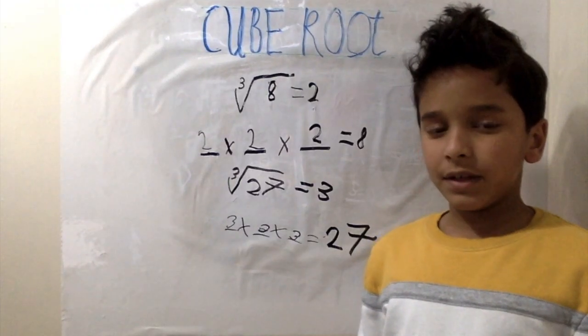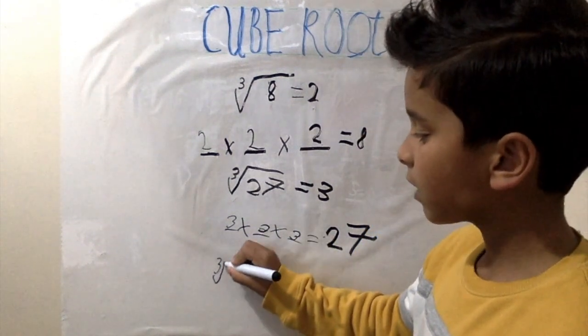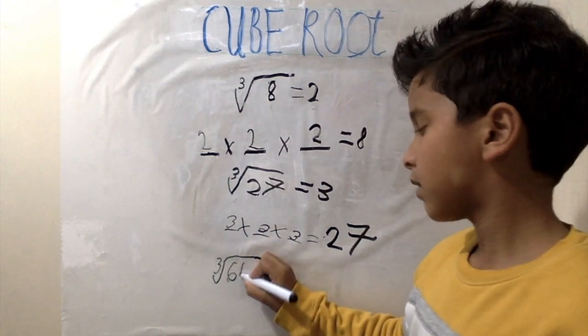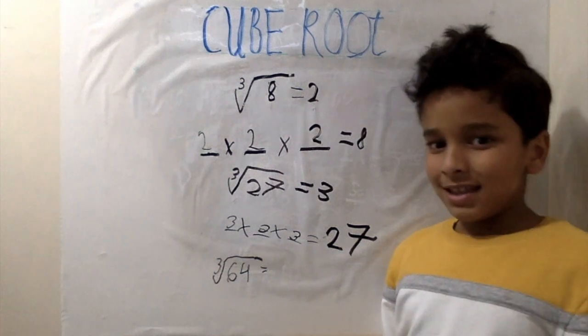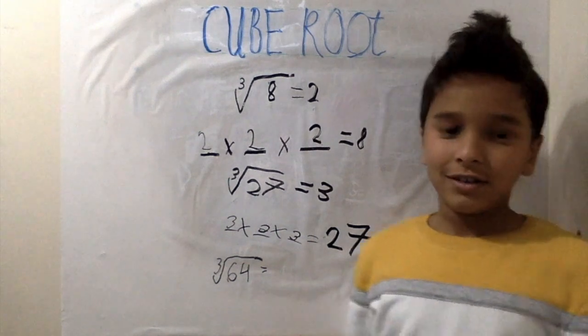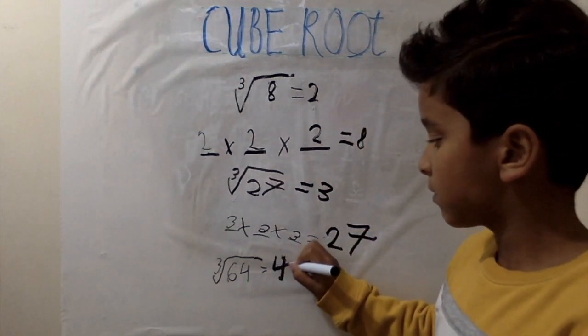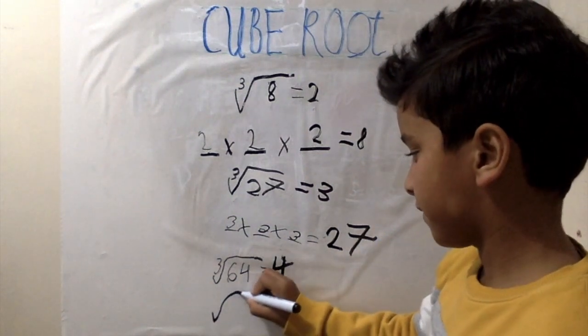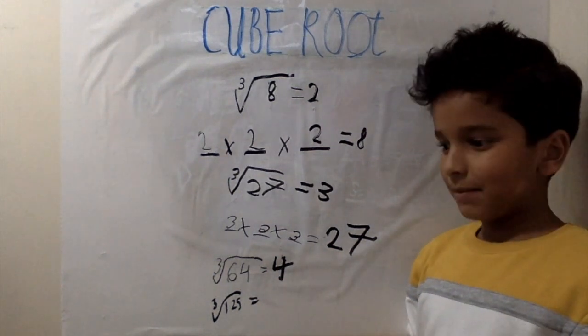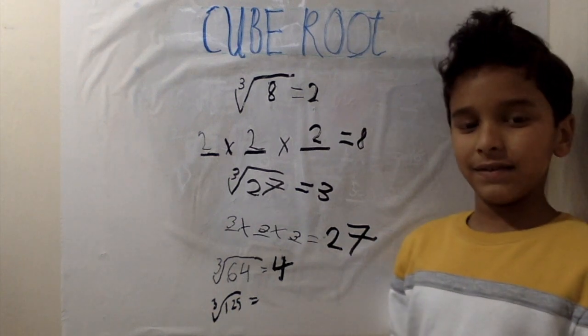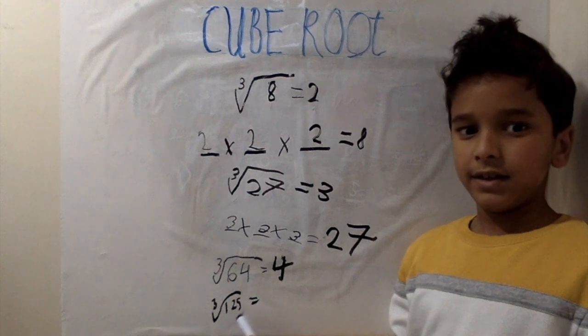Let's look at the cube roots from 64 to 1000. Cube root of 64 equals 4. 4 times 4 equals 16, 16 times 4 equals 64. So cube root of 64 equals 4. Cube root of 125 equals 5. 5 times 5 is 25, 25 times 5 equals 125. Cube root of 125 equals 5.